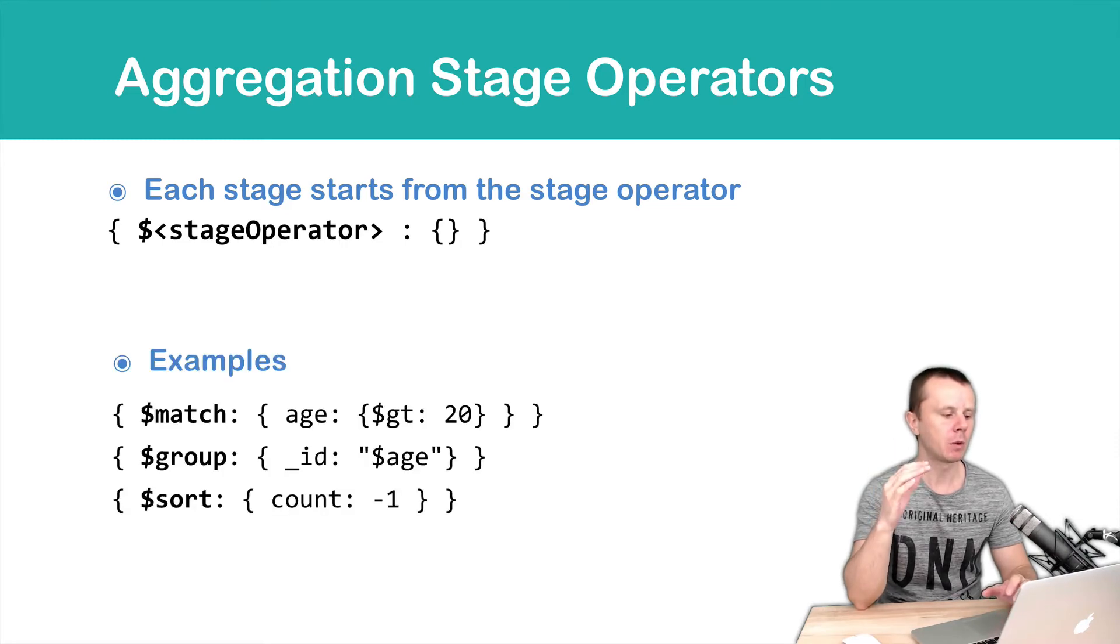In the first example, we use match aggregation stage operator. Then comes colon, and then object. Object contains key value pairs. We will not look at contents of each object in this case, because we will discuss each stage operator individually. But for now, you just need to remember how to construct each stage.